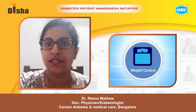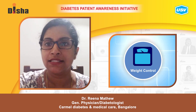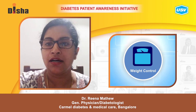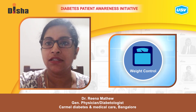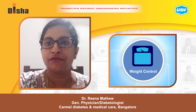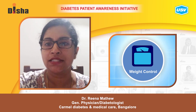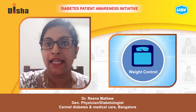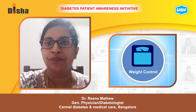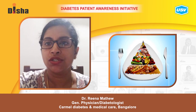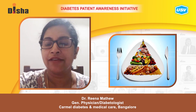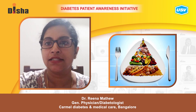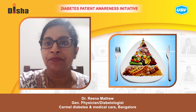Lowering body weight would really help them at this stage. Reducing weight by about 5 to 7% reduces the risk of becoming diabetic by about 58%. A low sugar, low fat, high fiber diet is what is recommended.